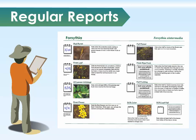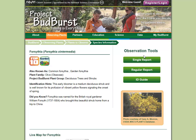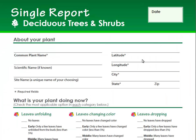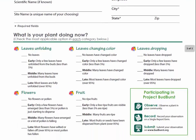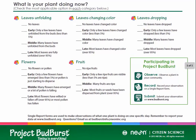Let's go back to the resource page for forsythia and take a look at the single report form. Single report forms are used for status-based monitoring. With single reports, you record what your plant is doing on the day you happen to see it. Note that the single report form asks you to record the date you are observing and a little information about your plant. Then, at the bottom of the form, you check the most applicable phase description for each of the categories listed.